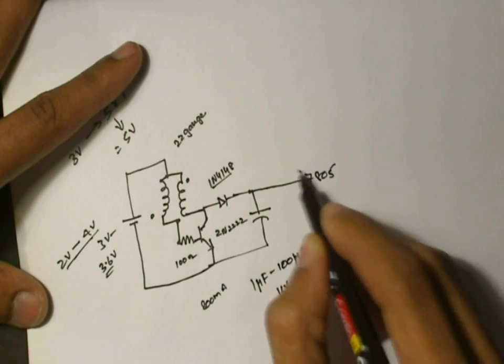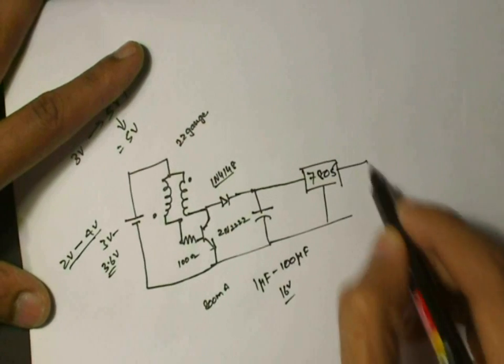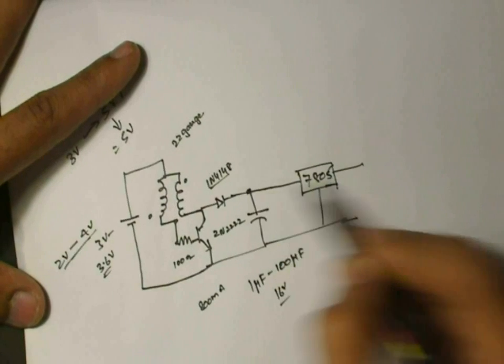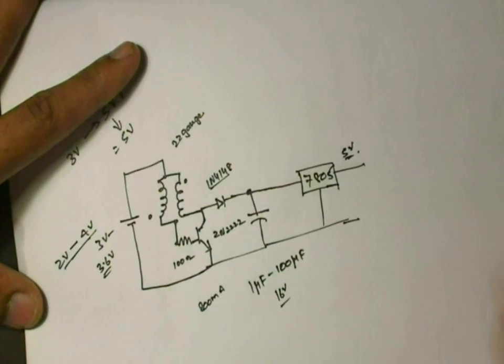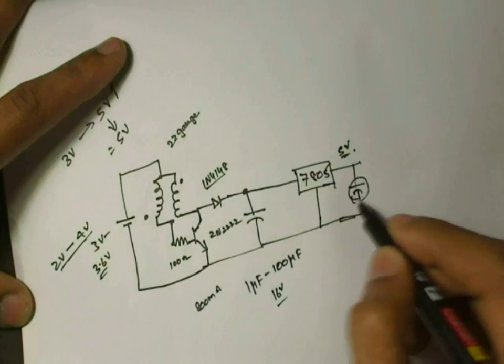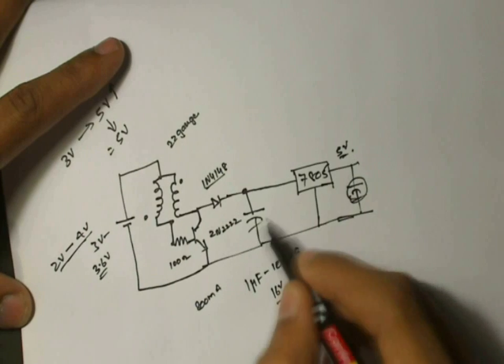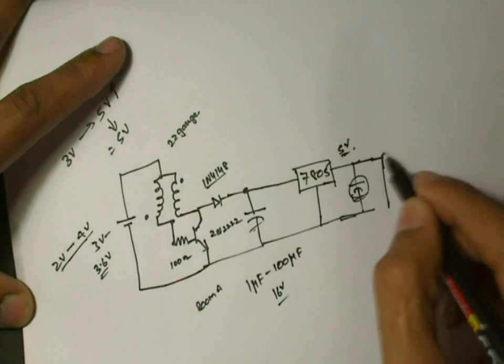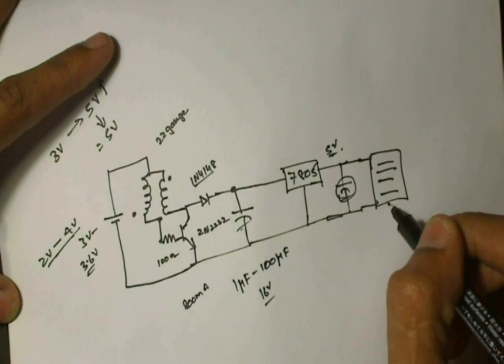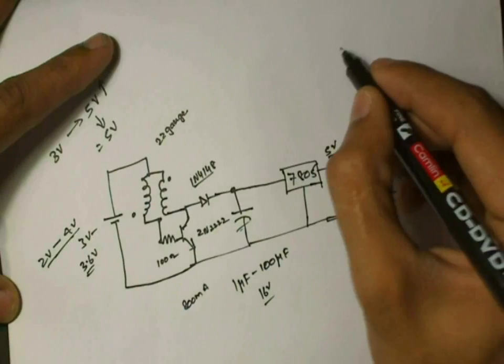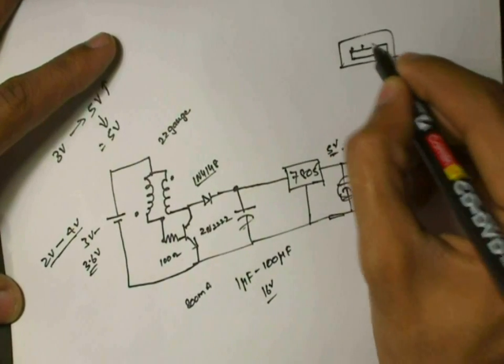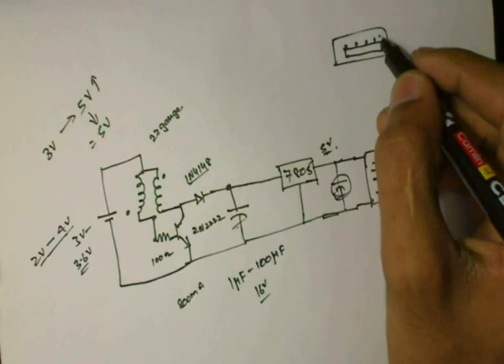From their output I'm going to connect a 7805 regulator. This is a voltage regulator which would regulate the output of this circuit to 5 volts maximum. Here you can connect a capacitor again, preferably, but it's not necessary. If you connect a high capacitance here, and from here you can connect a female USB pin. The female USB pin has four pins and the leftmost one is the ground and the rightmost one is the VCC which is the five volts.